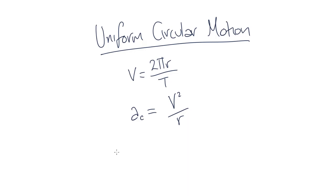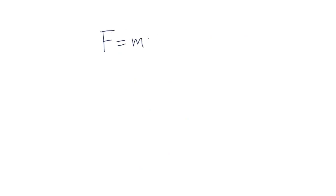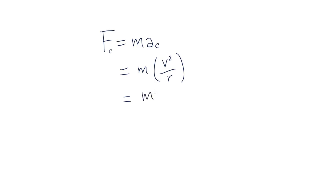So what is the force acting on the object? Well, we know that force is equal to mass times acceleration, and we know that for an object undergoing uniform circular motion, the acceleration is the centripetal acceleration. So if we substitute in the values we have for the centripetal acceleration, we'll see that the centripetal force is equal to mass times velocity squared divided by the radius, mv²/r.